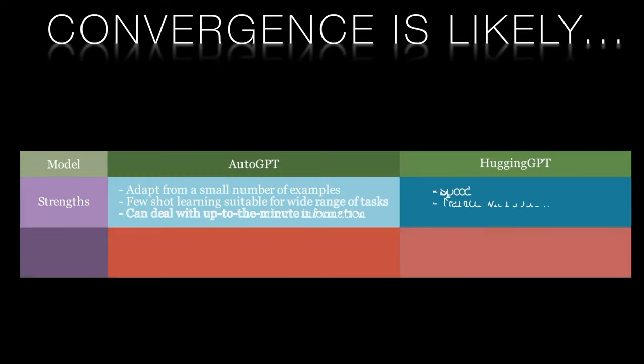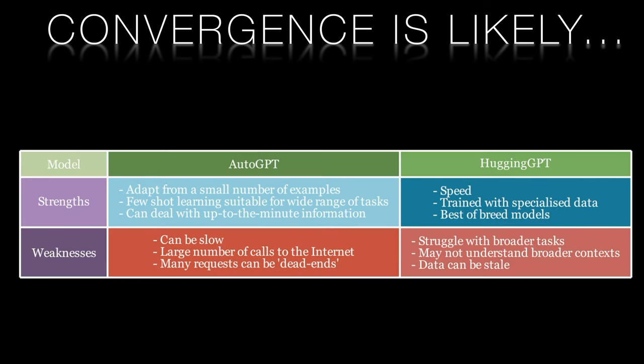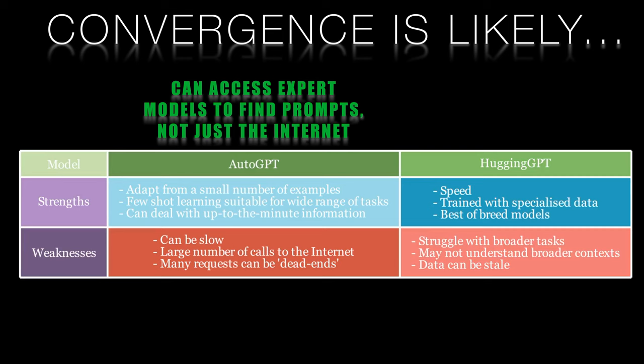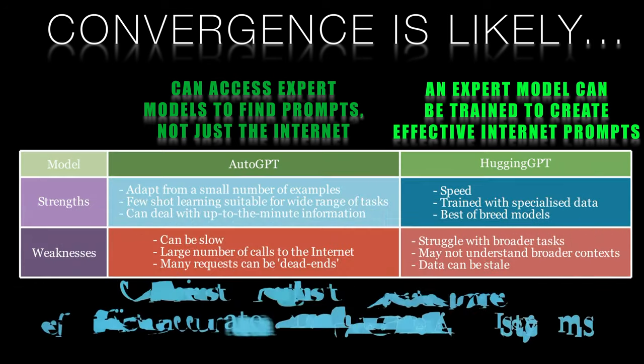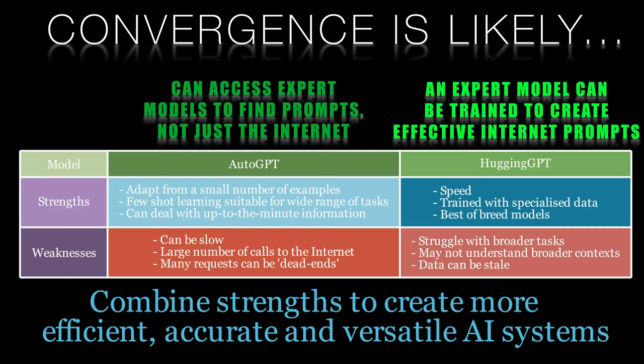Lucidate sees the potential for convergence between both approaches, with Auto-GPT benefiting from some of Hugging-GPT's techniques and expert models. Currently, Auto-GPT searches the internet to get few-shot learning prompts, but why shouldn't it query expert models in addition? At the same time, there's no reason why one of Hugging-GPT's expert models shouldn't be something that queries the very latest information available from the internet. This convergence could lead to a best-of-breed approach, where the strengths of each model are combined to overcome their weaknesses.